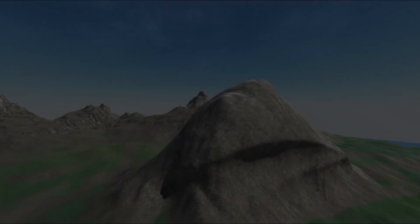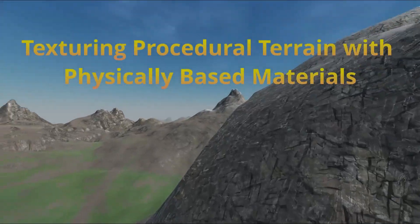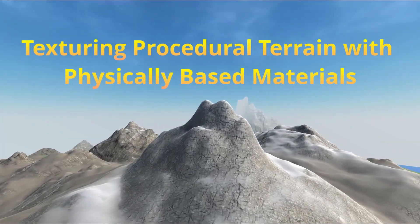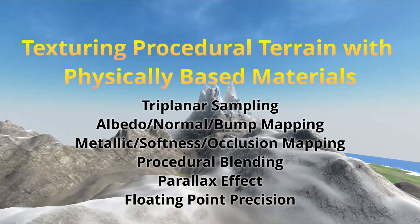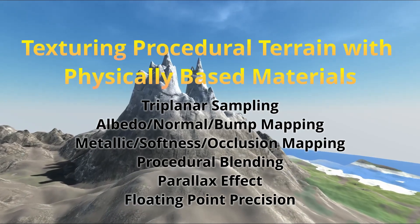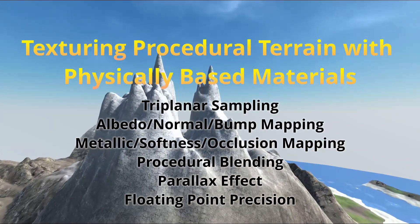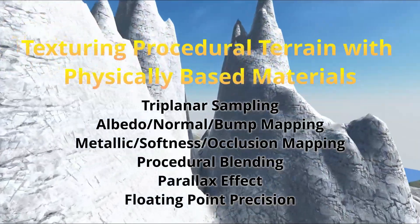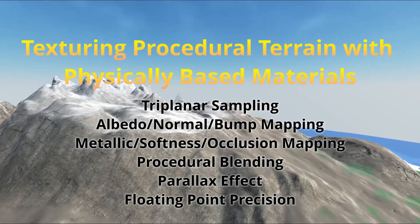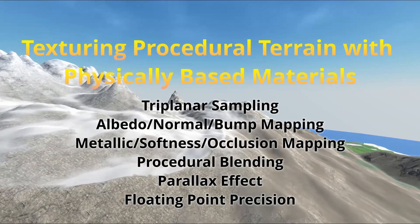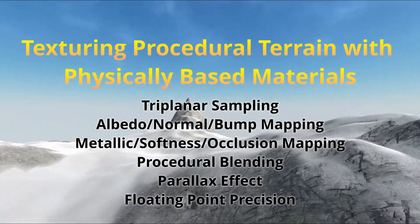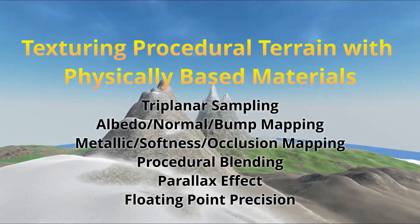In this video I'll talk about special considerations for texturing procedural and infinite 3D terrain with physically based materials. This includes triplanar sampling because of no UVs, albedo mapping, creating tangents for bump or normal mapping, metallic mapping, softness mapping, and occlusion mapping, blending between different textures on the same material, single material with multiple textures and procedural blending, issues with the parallax effect when using triplanar sampling, floating point errors, and changing near and far planes to accommodate for them.